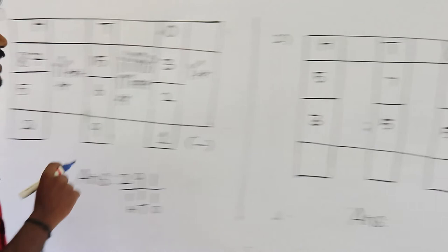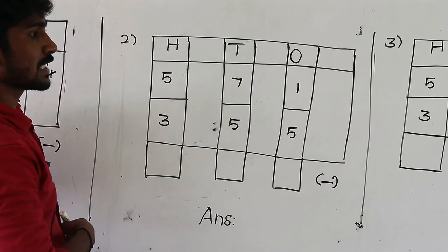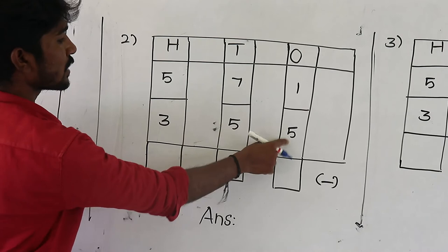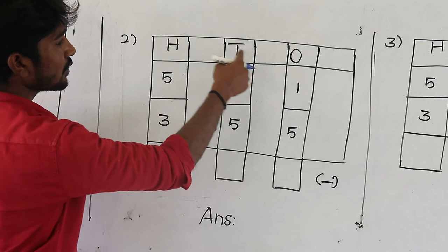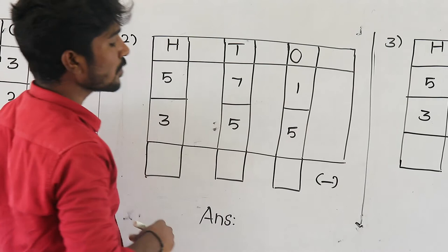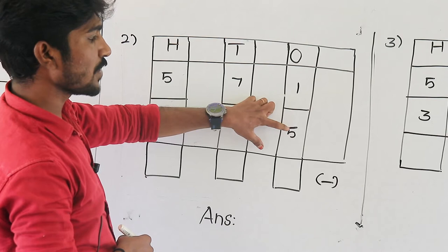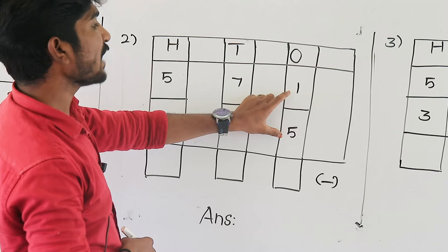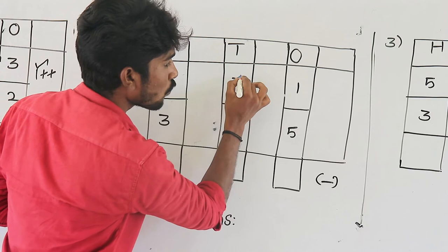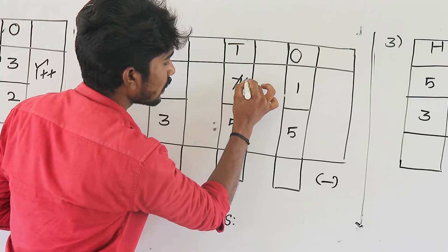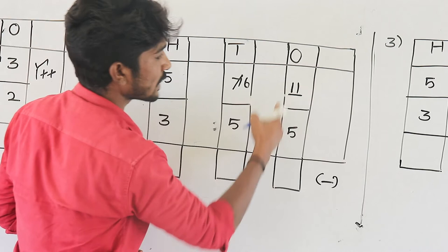Next, the second question. These numbers are also three-digit numbers. First, select the ones value. Upper value is 1, lower value is 5 — so this subtraction is impossible. Get a borrow from the tens place. The tens digit is 7; take borrow of 1, so remainder is 6. Write the borrow value 1 here and add to get 11.